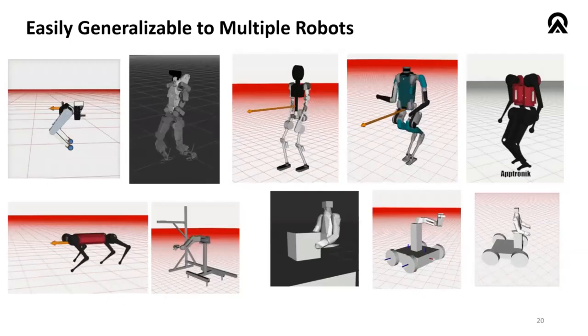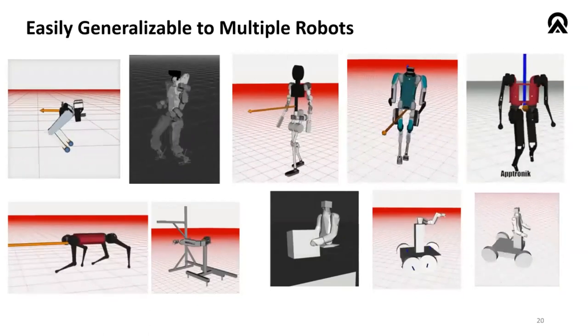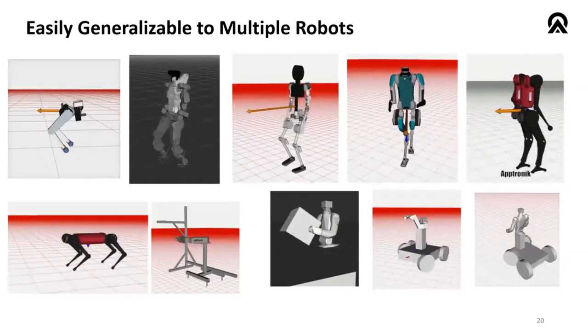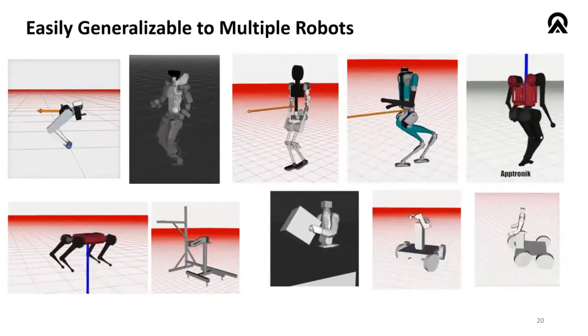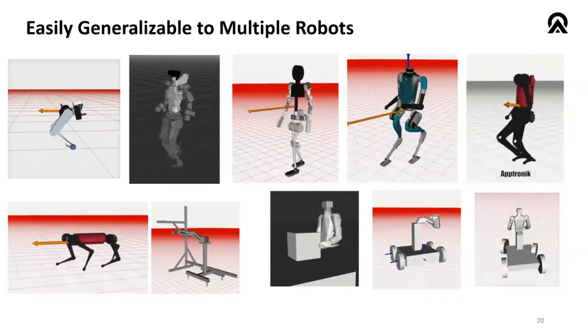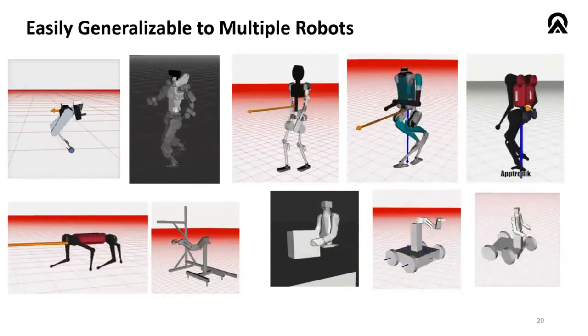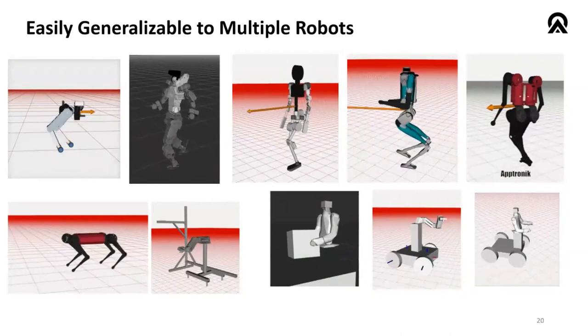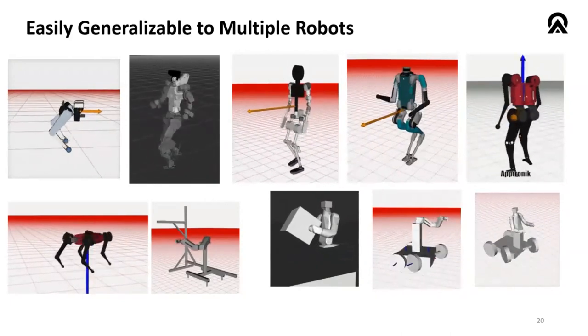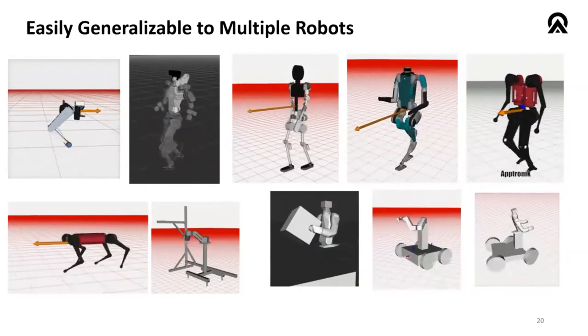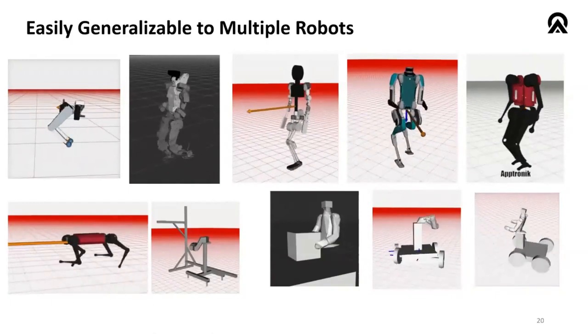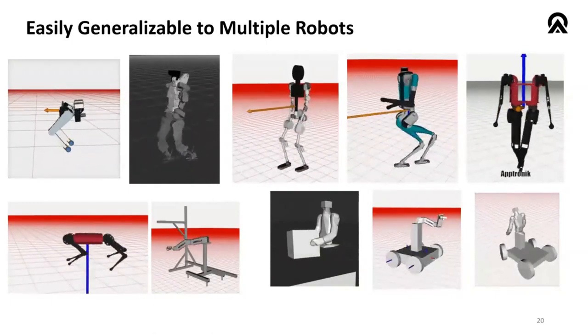So our controller generalizes really well to a wide range of other systems. Shown here are just a sampling of a few different robots that we've designed, coupled with a number that are just out on the internet you can download and play with. But we're really happy that for each of these systems, it's about less than a day of dev time to get these up and running.